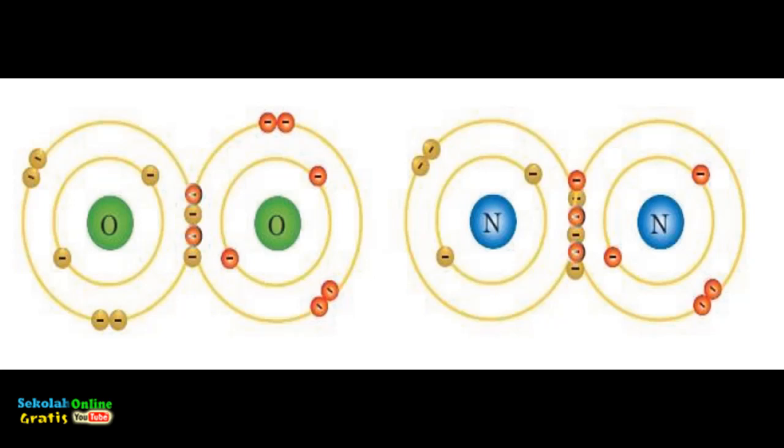Covalent bonds in O atoms can be written with O-strips O. Covalent bonds in N atoms are written with N-strips N-strips N compounds with covalent bonds between atoms are called covalent compounds. Here's the structure of sharing electrons in oxygen and nitrogen.